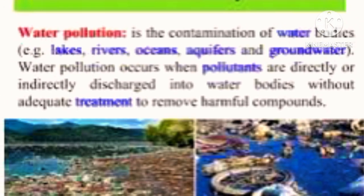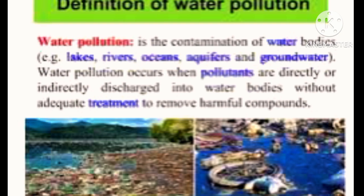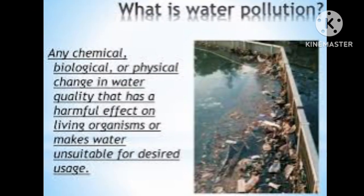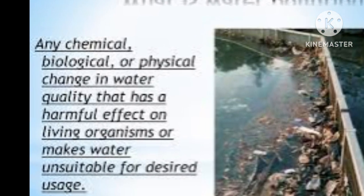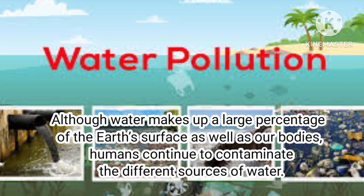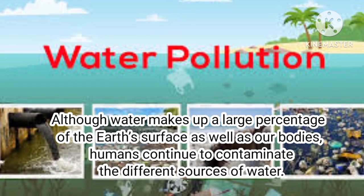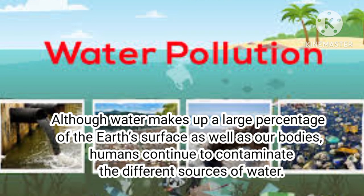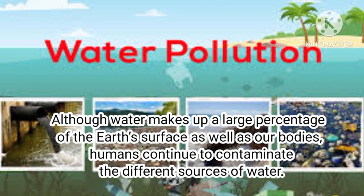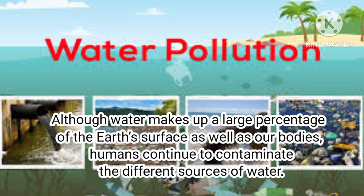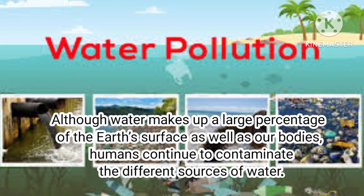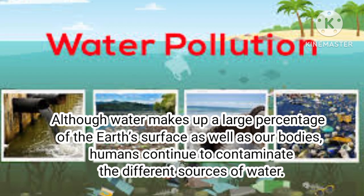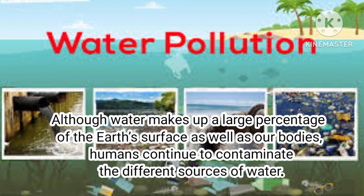Water pollution is the contamination of water bodies — lakes, ponds and oceans. Although water makes up a large percentage of the earth's surface as well as our body, humans continue to contaminate the different sources of water.